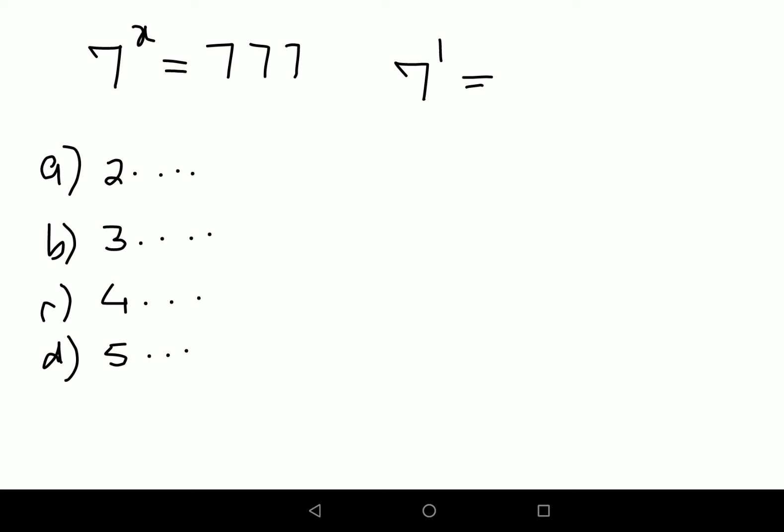7 raised to 1 gets you 7. 7 raised to 2 gets you 49. 7 raised to 3 gets you 343. Now 7 raised to 4 is basically 343 into 7. Even if you round off that gets you 350 into 7. That is more. That is definitely much more than 777. So by default your answer of x will lie between 3 and 4.